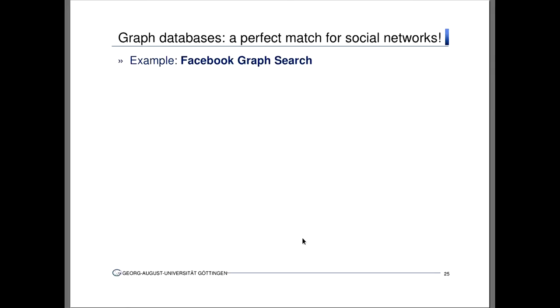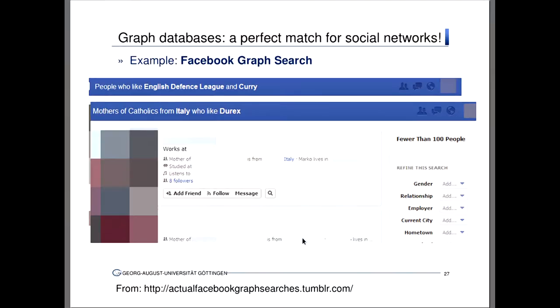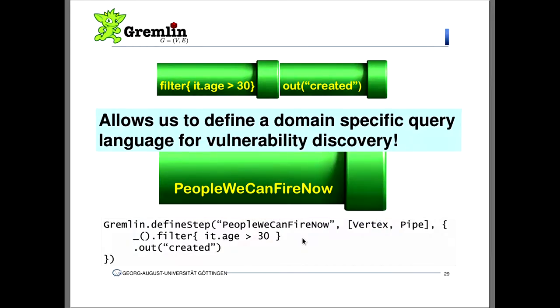Of course, for social networks this is extremely useful — the best example is Facebook Graph Search, where they made a UI to click together different kinds of graph database queries. But the amazing thing is you can store other useful things in graph databases. The code property graph, by definition, is a property graph, so you can store it in a graph database. And now we can use this trick — taking named walks in this graph — to define a domain-specific query language for vulnerability discovery. That's the idea.